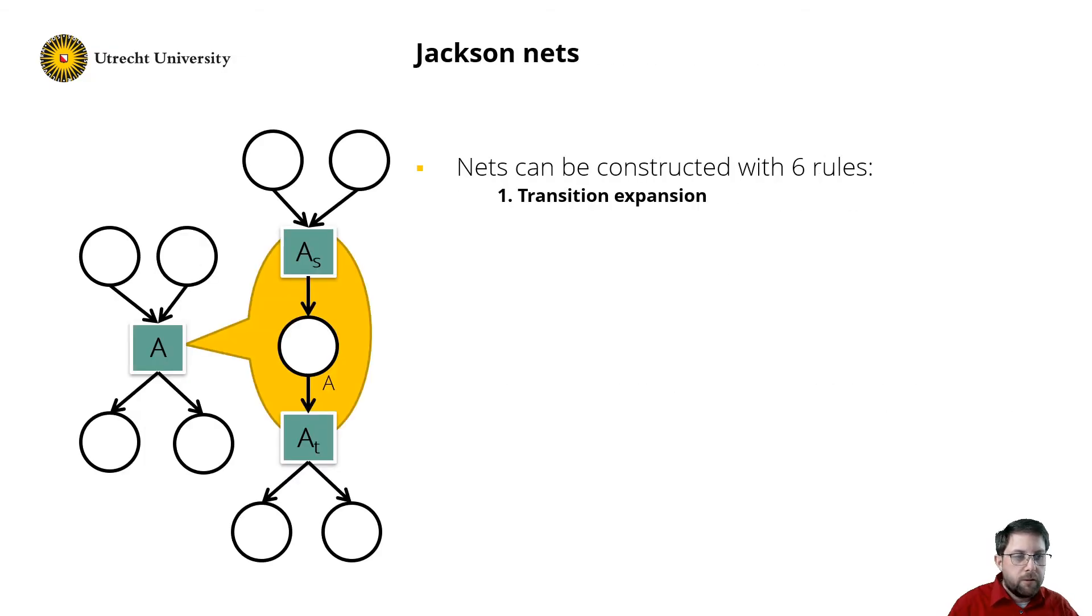A completely different class of nets are the Jackson nets. These nets are defined using six construction rules. The first rule is transition expansion. Consider transition A. What the rule states is that we can split the transition into two parts, the consumption of the tokens and the production of the tokens. So we have one transition for the consumption, AS, and one for the production, AT, which we connect with a place that we call A. So you could also read this as, I start with A, I am working on A, and I am finished with A.